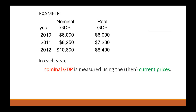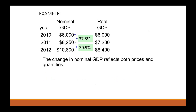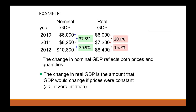In each year, nominal GDP was measured using the then-current prices — 2010, 2011, and 2012 prices. Real GDP was measured using constant prices, the base year price of 2010 in this example. The change in nominal GDP was larger than the change in real GDP, because nominal GDP reflected both price and quantity changes, whereas real GDP only took into consideration the change in quantities. We held prices constant, not allowing for inflation — hence the growth rate in real GDP is generally going to be lower than the growth rate in nominal GDP.